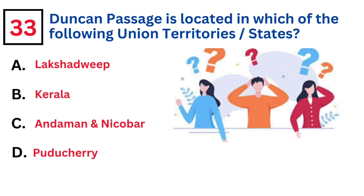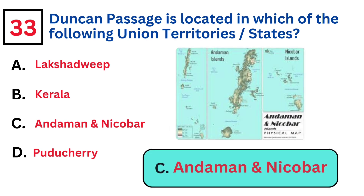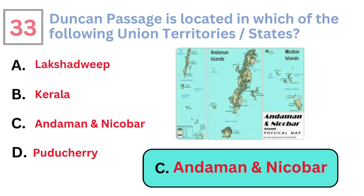Duncan Passage is located in which of the following union territories or states? Answer C. Andaman and Nicobar Islands.